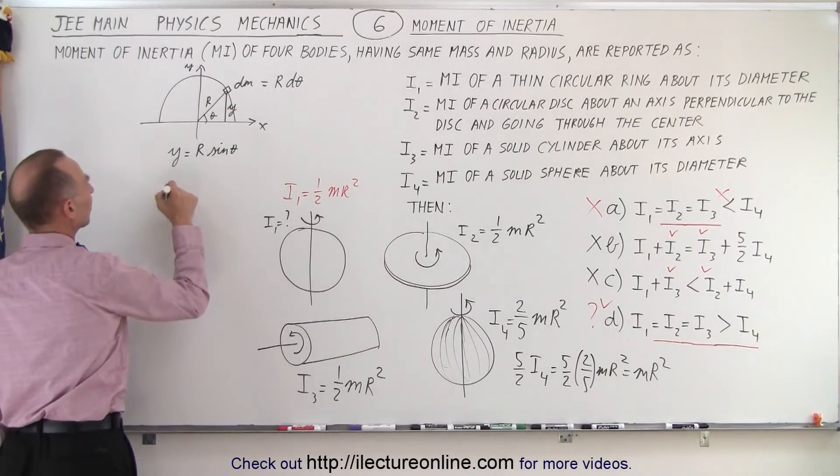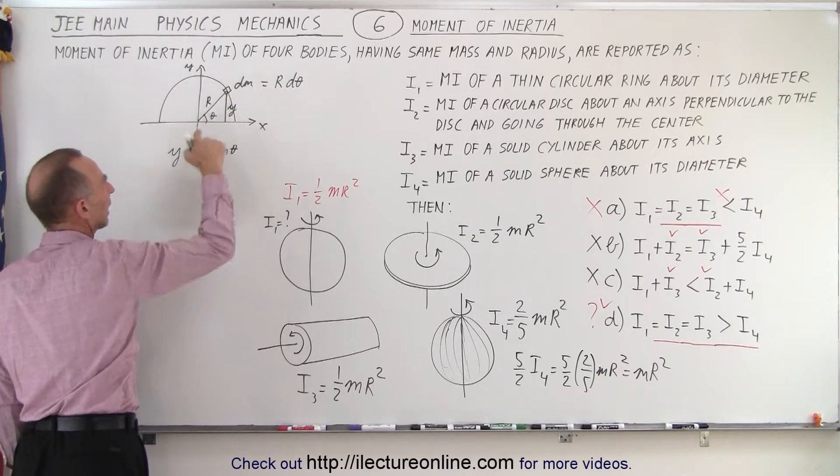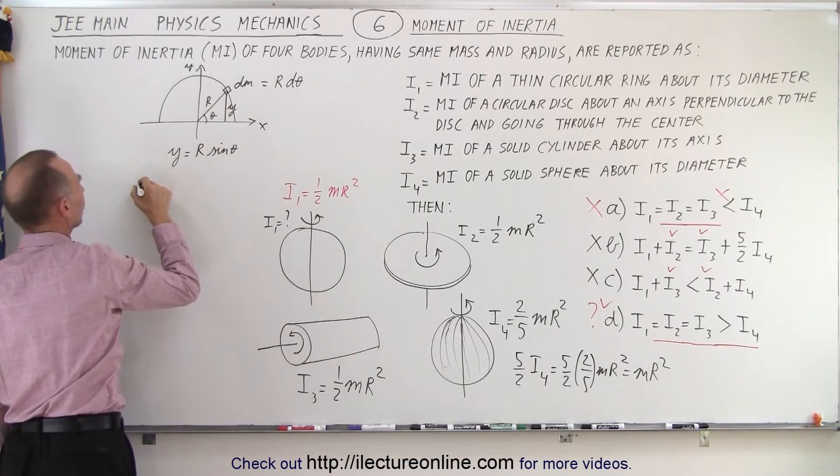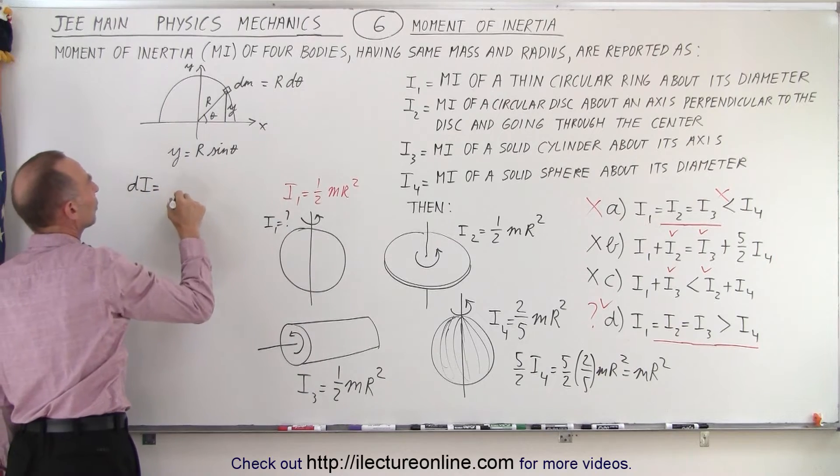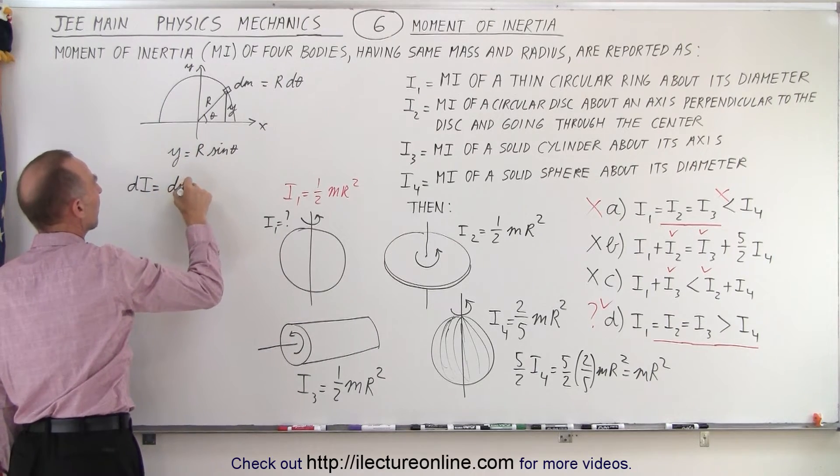Okay? So then I can say that the moment of inertia of that small element right here, the moment of inertia, call it di, is equal to dm, the mass, times y squared.